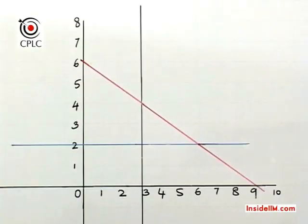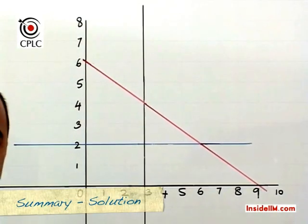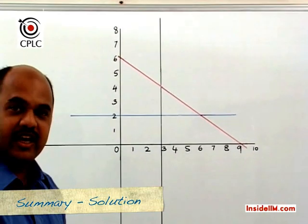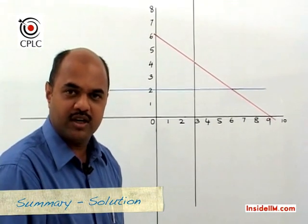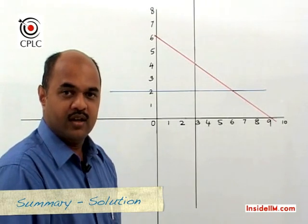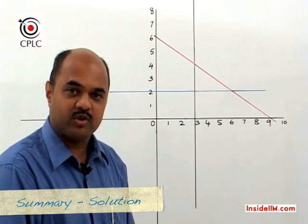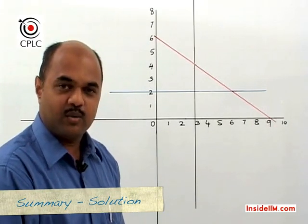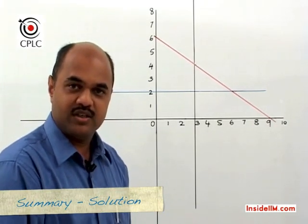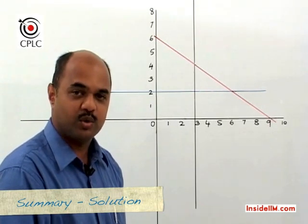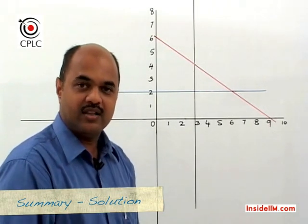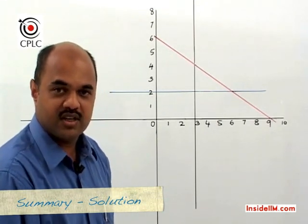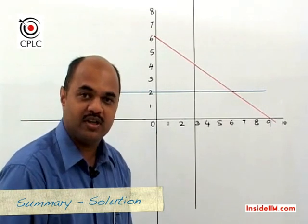Now, what you can see is actually the solution to the problem discussed initially. To recap: we had a test of 10 verbal and 10 quant questions. We need to solve a minimum of 2 verbal and 3 quant questions. A verbal question takes 4 minutes, a quant question takes 6 minutes, and the maximum time available is 36 minutes. The question was: in how many ways can such a test be attempted?